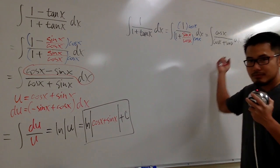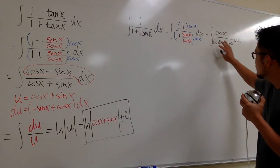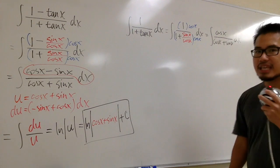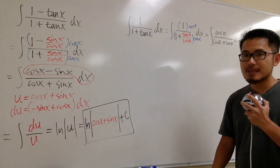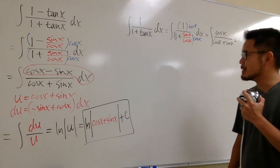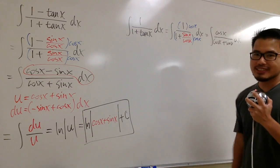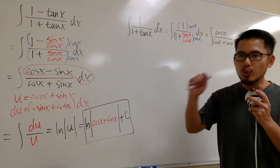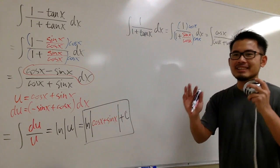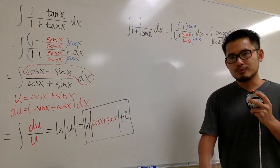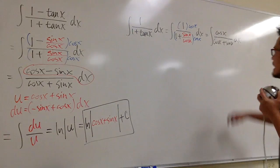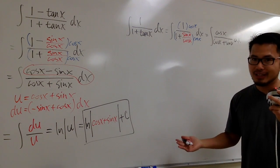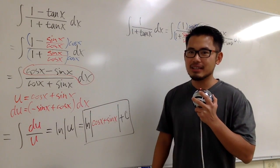And this is hard, right? Because u sub wouldn't work, and I don't really see any of the nice trick identity that can help us out at the moment. So I don't know. And this is how I like to think about hard questions, especially for integrals. I'm going to begin to ask myself this question. Wouldn't it be nice if I have an easier situation instead? So wouldn't it be nice if I have a cos x minus sin x over this instead? Why? Because we just did that, right?